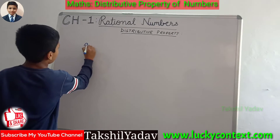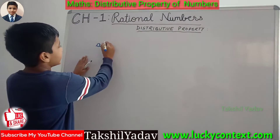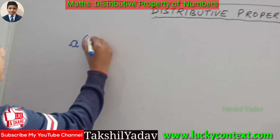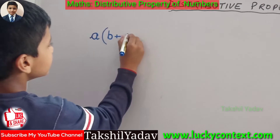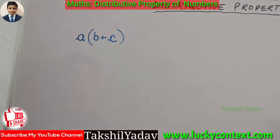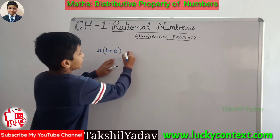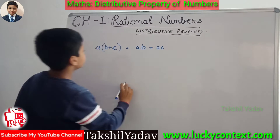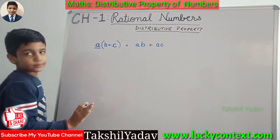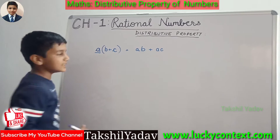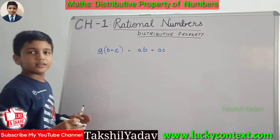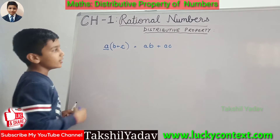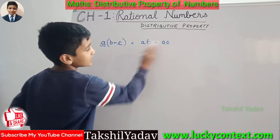Suppose our first number is A, and A is multiplied by the sum of the second number B and the third number C. So when we solve this formula, we get AB plus AC. Here A is distributed among both numbers B and C — we can say A is multiplied by both numbers. So B plus C into A can also be written as AB plus AC.